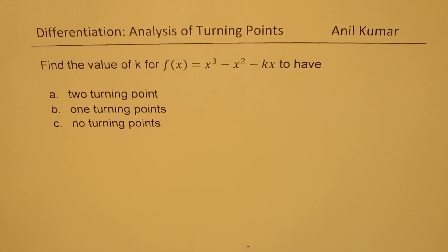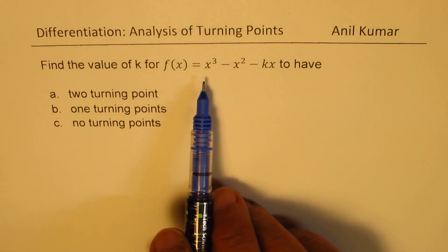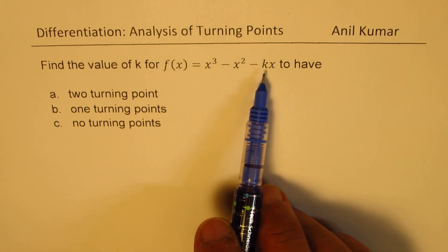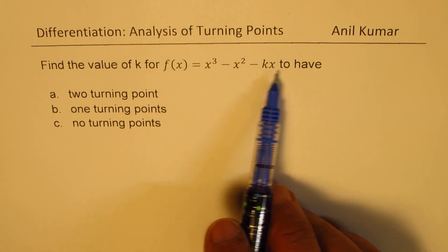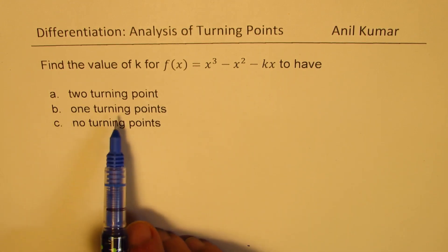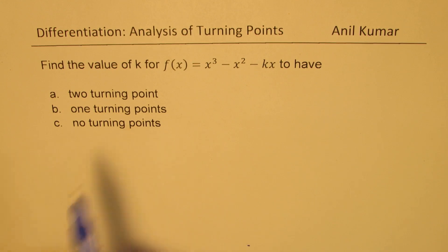I'm Anil Kumar, sharing with you a very important question based on turning points. The question here is: find the value of k for f(x) = x³ - x² - kx to have two turning points, one turning point, or no turning points.